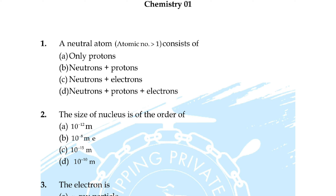Question number four: the ratio of charge and mass should be greater for — option A: proton, B: electron, C: neutron, option D: alpha particle. Correct answer is option B: electron. Question number five: the increasing order of the first ionization enthalpies of elements B, P, S, and F — lowest first.